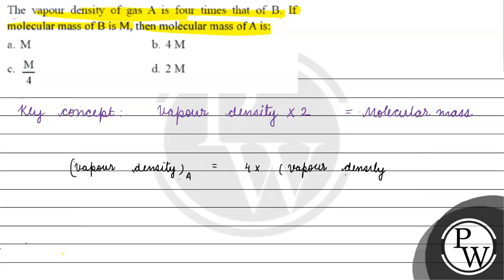Vapor density - we can write this as molecular mass divided by 2. So we have molecular mass of A divided by 2 equals four times molecular mass of B divided by 2.